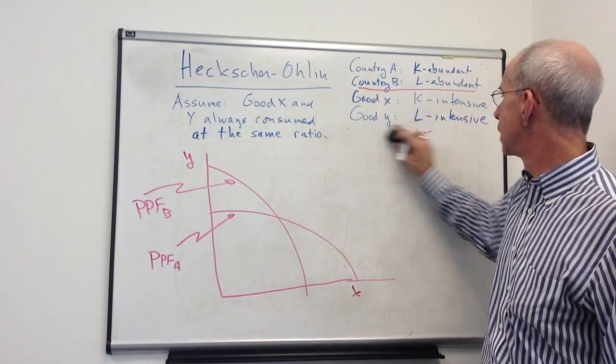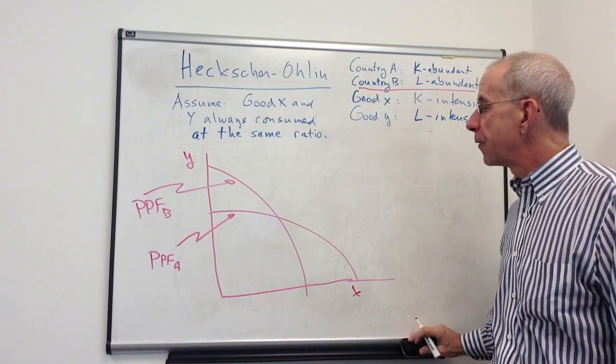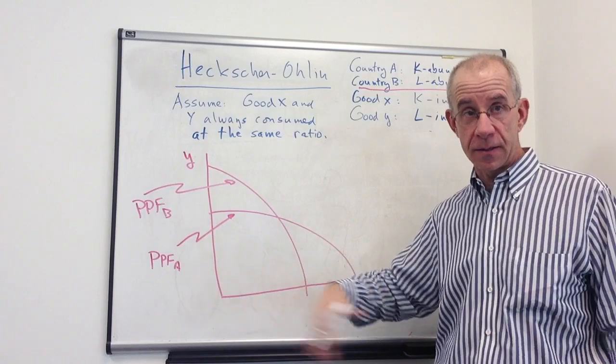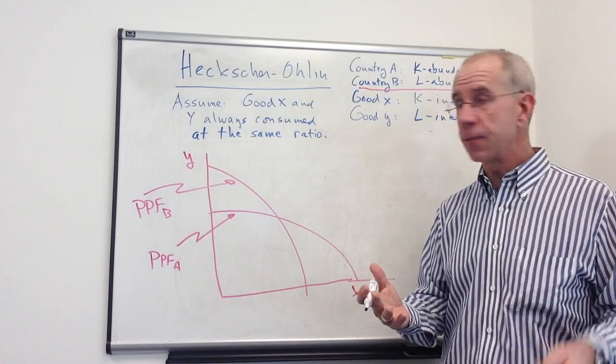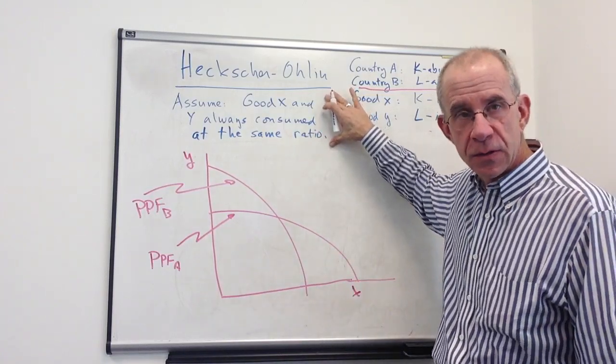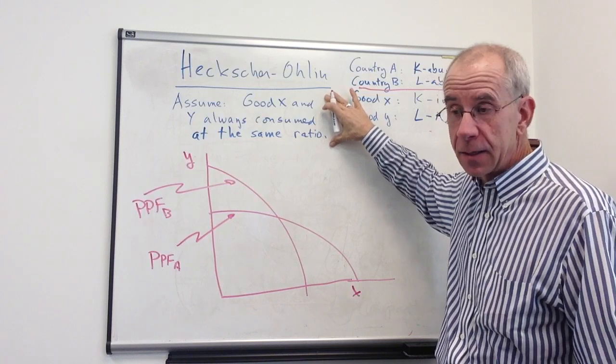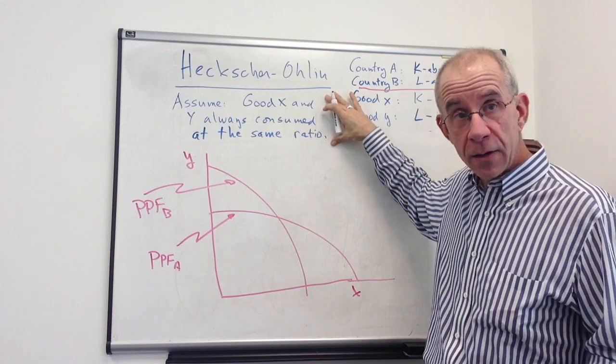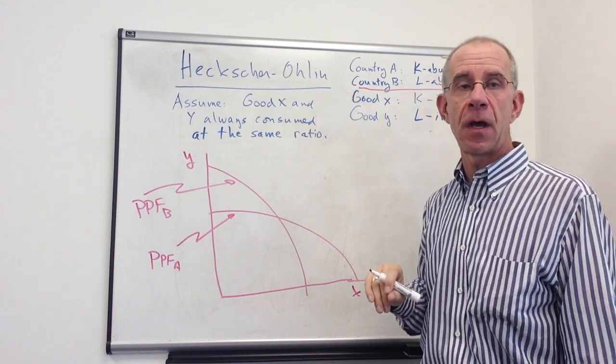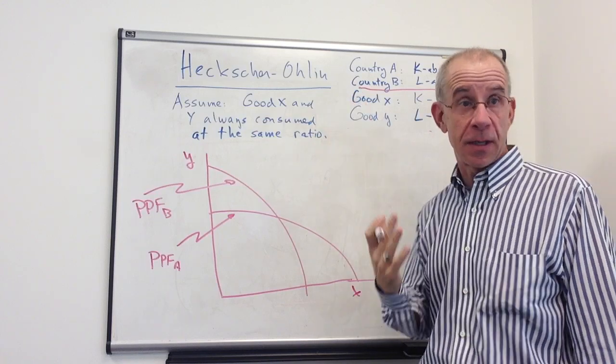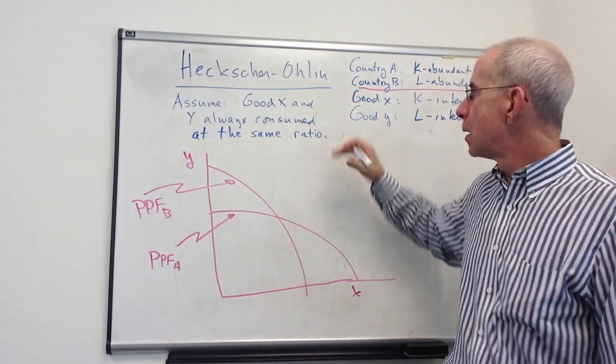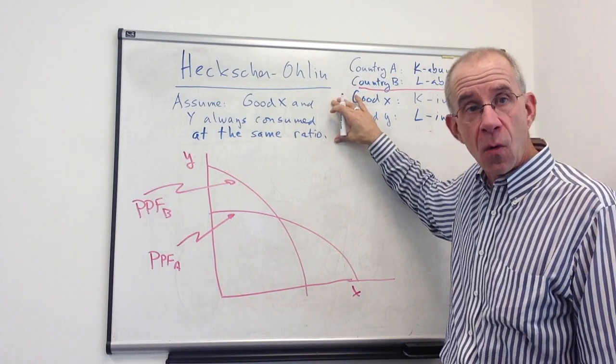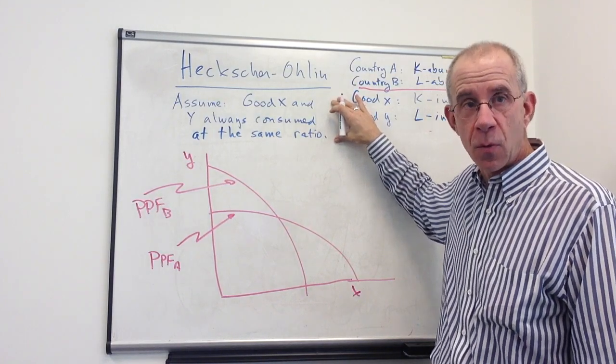So let's go into this now, thinking about the demand conditions. This is purely on the supply side, this is just the production possibility frontiers. And this is where this assumption is going to come into play. So this is a more stringent assumption than is actually required for Heckscher-Ohlin, but this particular assumption is going to make it easy to draw. We're going to assume that good X and good Y are always consumed in the same proportion in both countries.